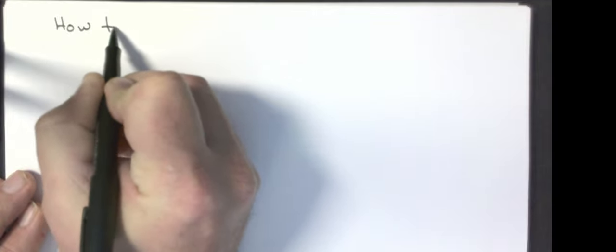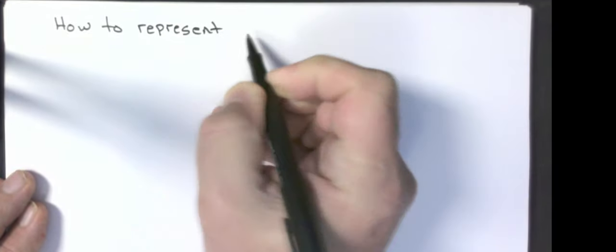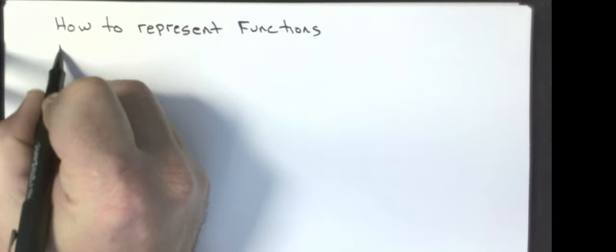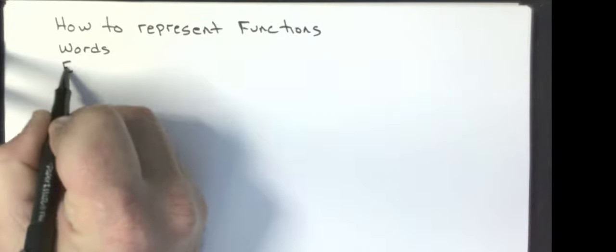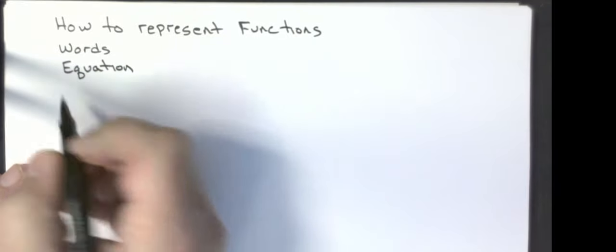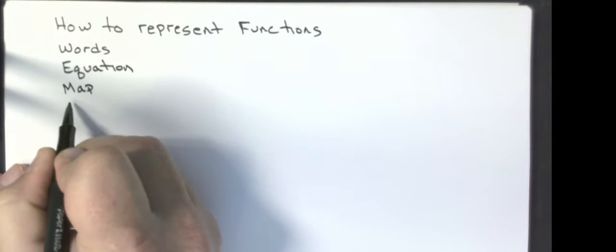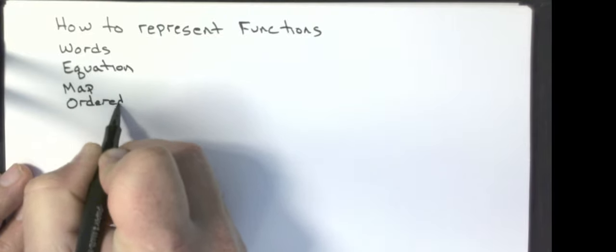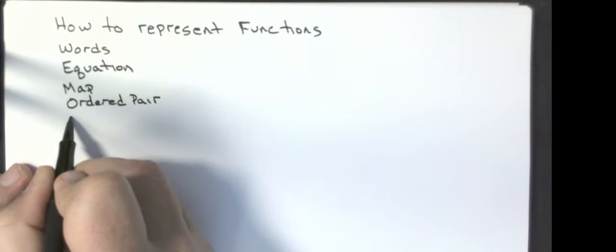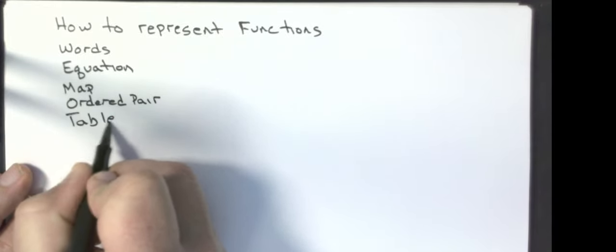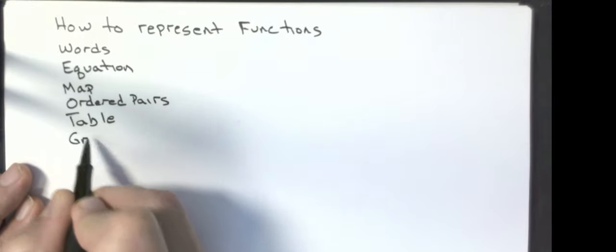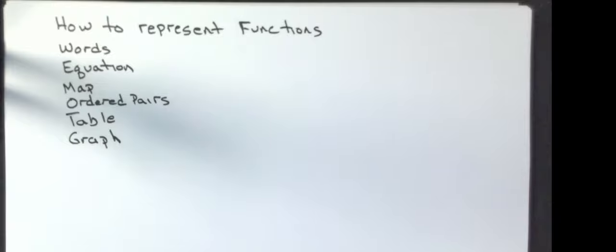The other thing we need to talk about is how to represent functions. We can represent them as words, we can represent them with an equation, we can draw a map, we can have a group of ordered pairs, or we can have a table — which is another way to represent that set of ordered pairs. From the ordered pairs or the table we can put these on a graph. I'm going to take the same function and represent it all of these different ways.